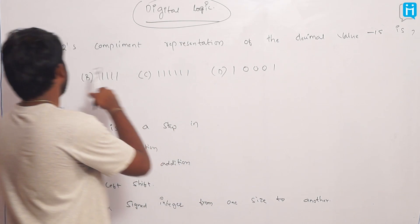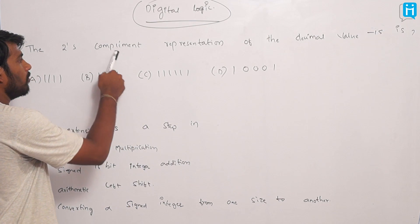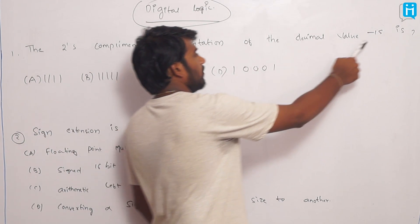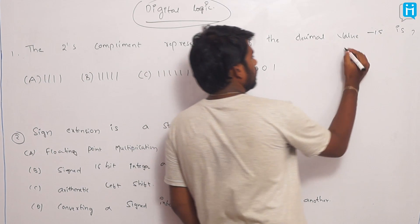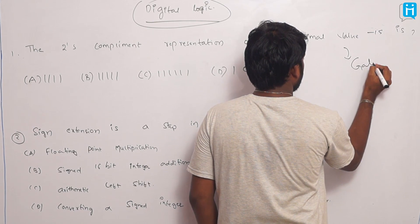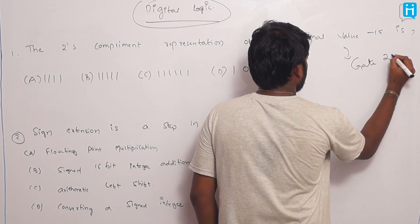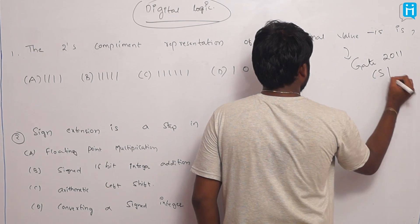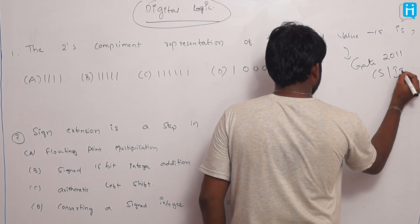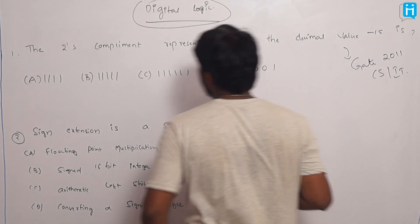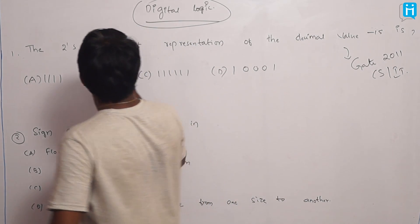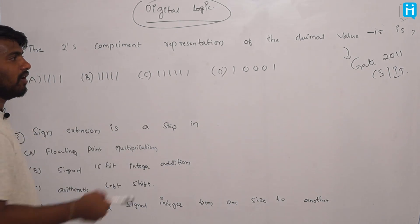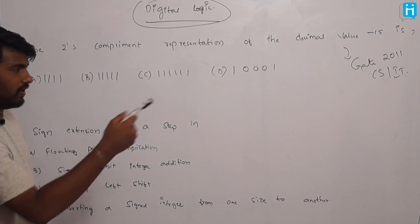The first question: the 2's complement representation of the decimal value minus 15. This has occurred in GATE 2011 Computer Science and IT. So the question is: what is the 2's complement representation of the decimal value minus 15?